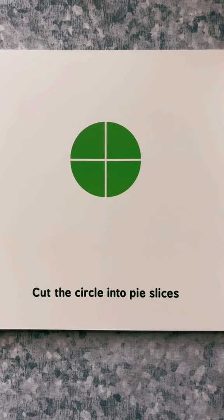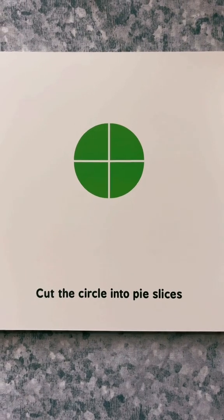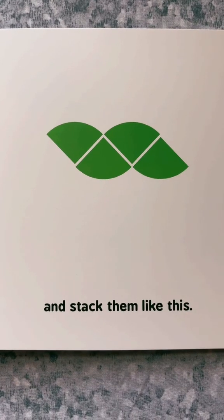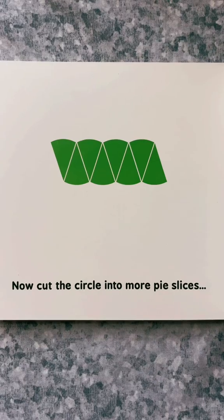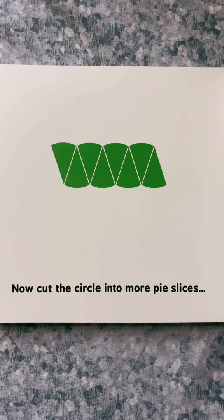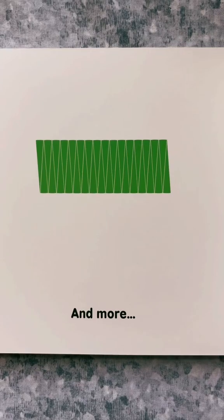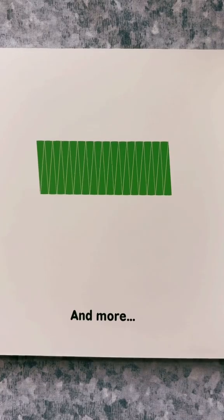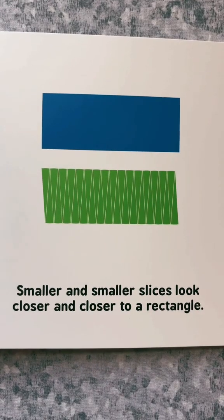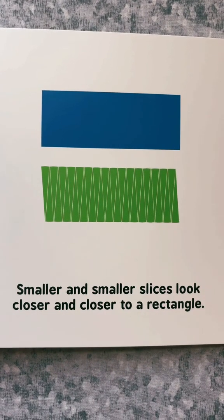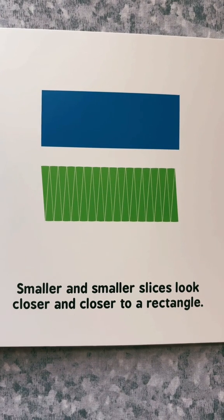Cut the circle into pie slices and stack them like this. Now, cut the circle into more pie slices. And more. And more. Smaller and smaller slices look closer and closer to a rectangle.